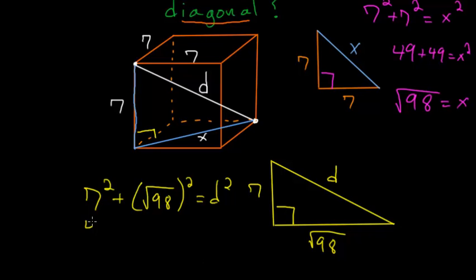7 squared is 49. Root 98 squared is just 98. This is D squared. 49 plus 98 is 147. So D is just the square root of this.